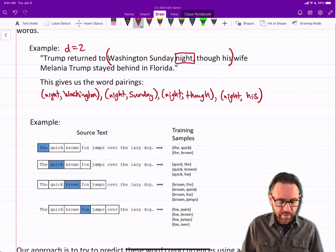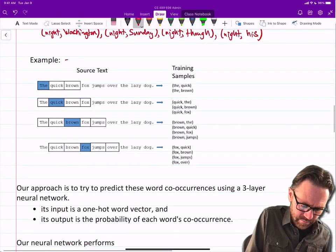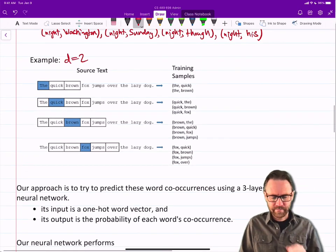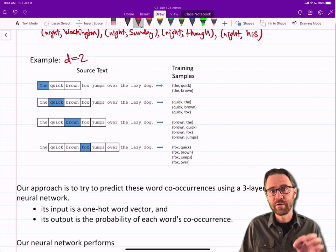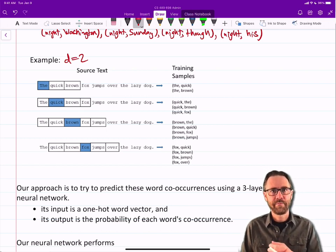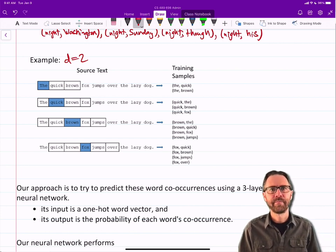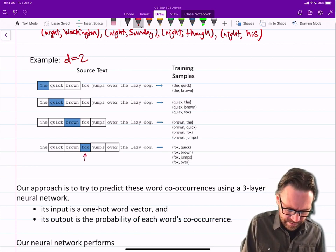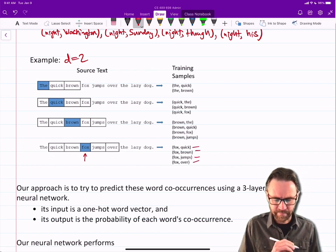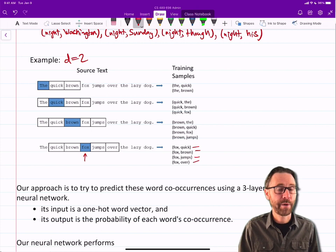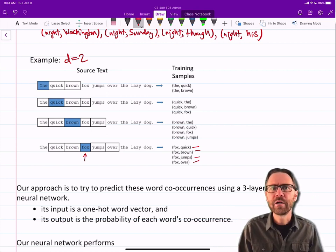Here's another example of D equals 2. Looking centered on the word highlighted in blue, you can see it forms the word pairs. For example, with this last example fox. So fox and quick, fox and brown, jumps and over. We can collect a whole bunch of word pairs from neighborhoods of words. What are we going to do with those?